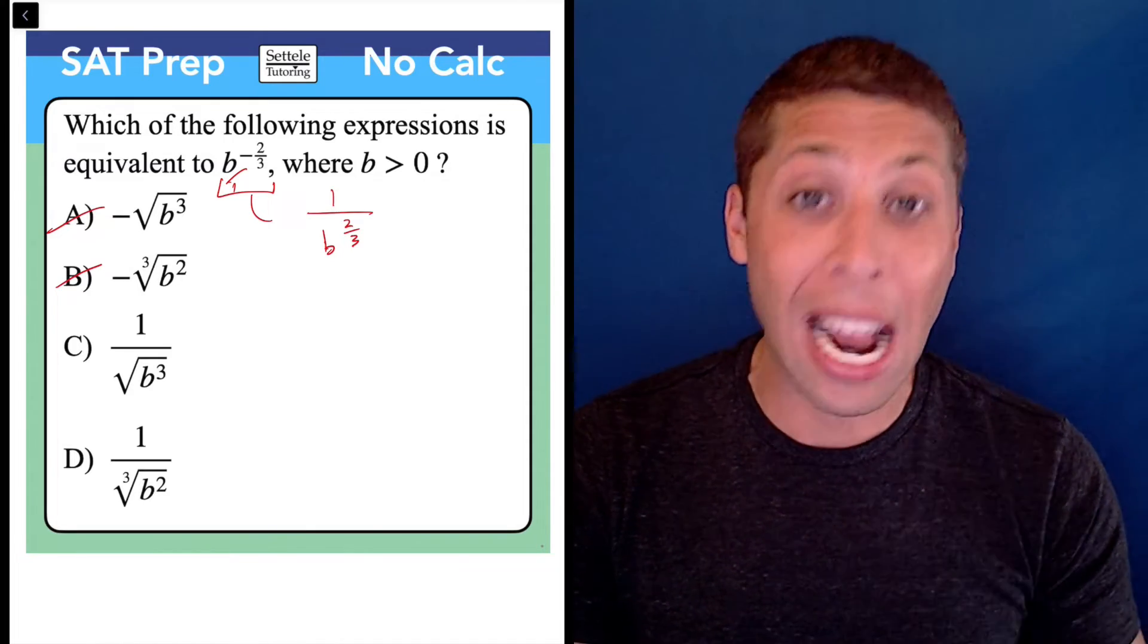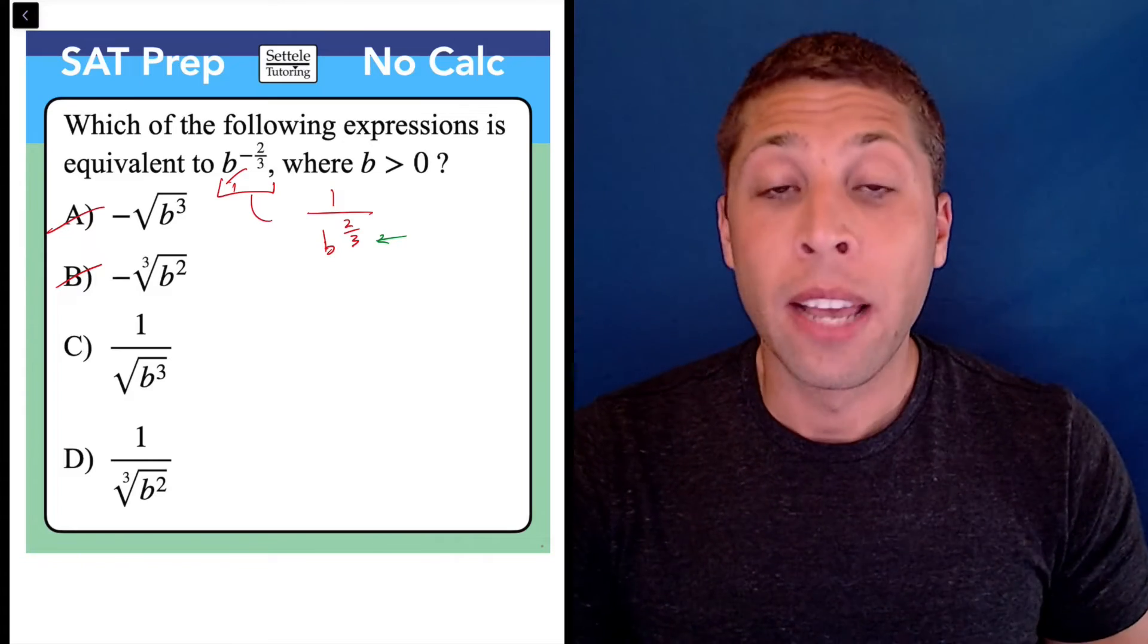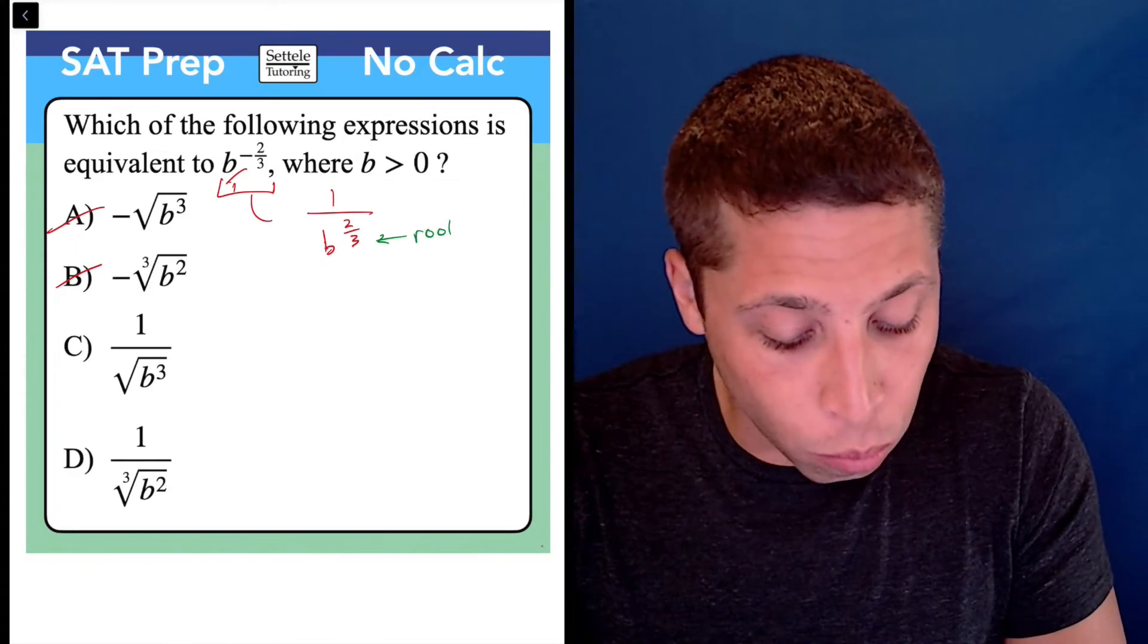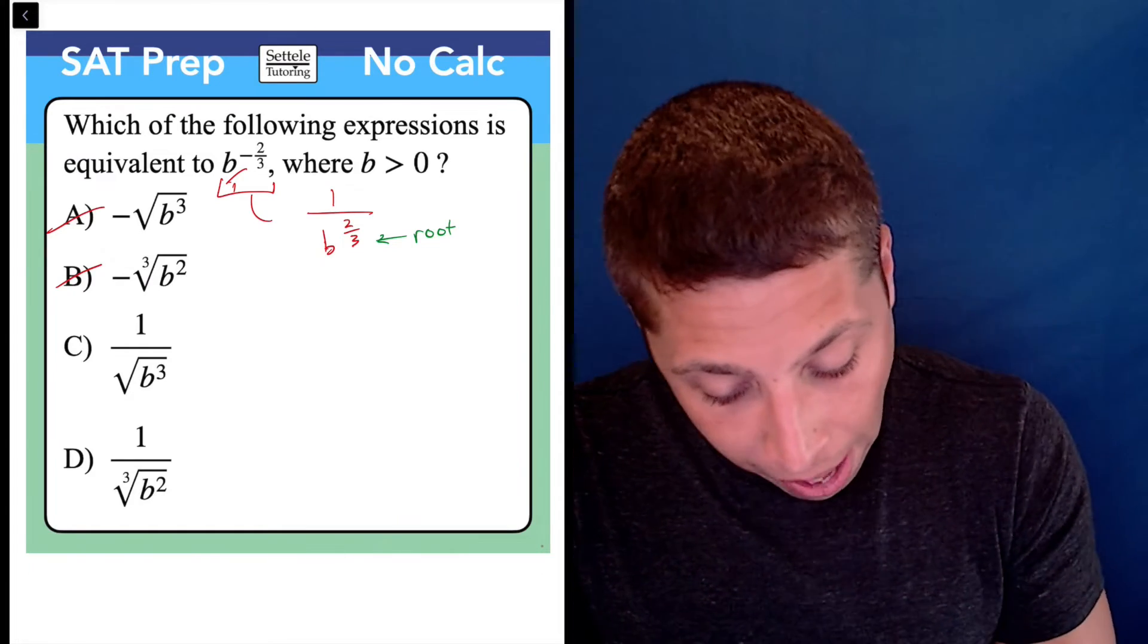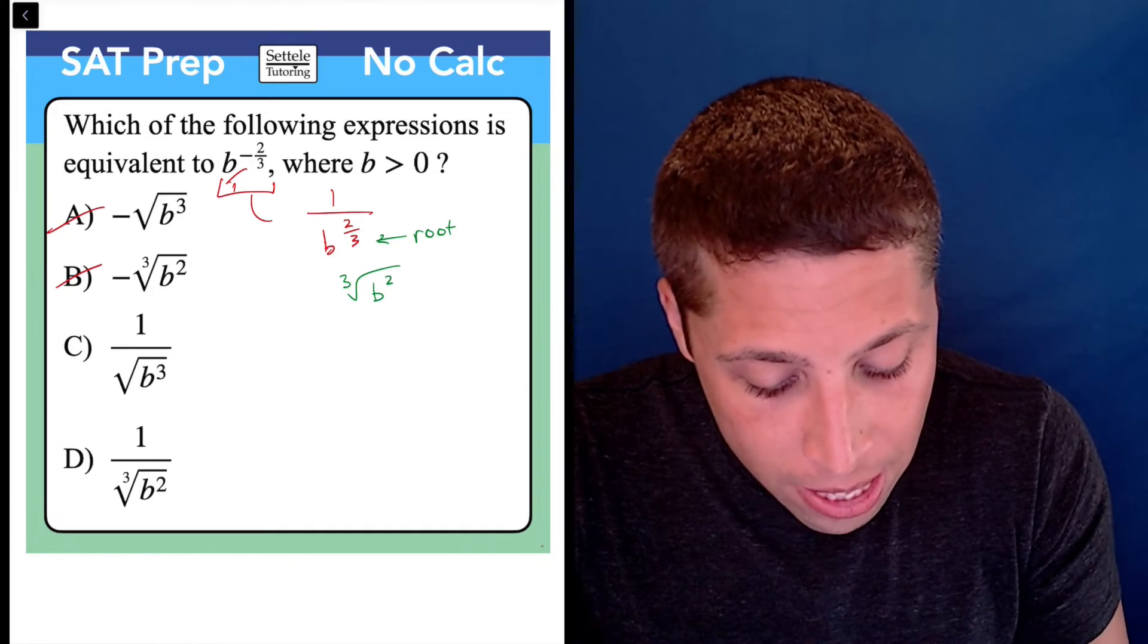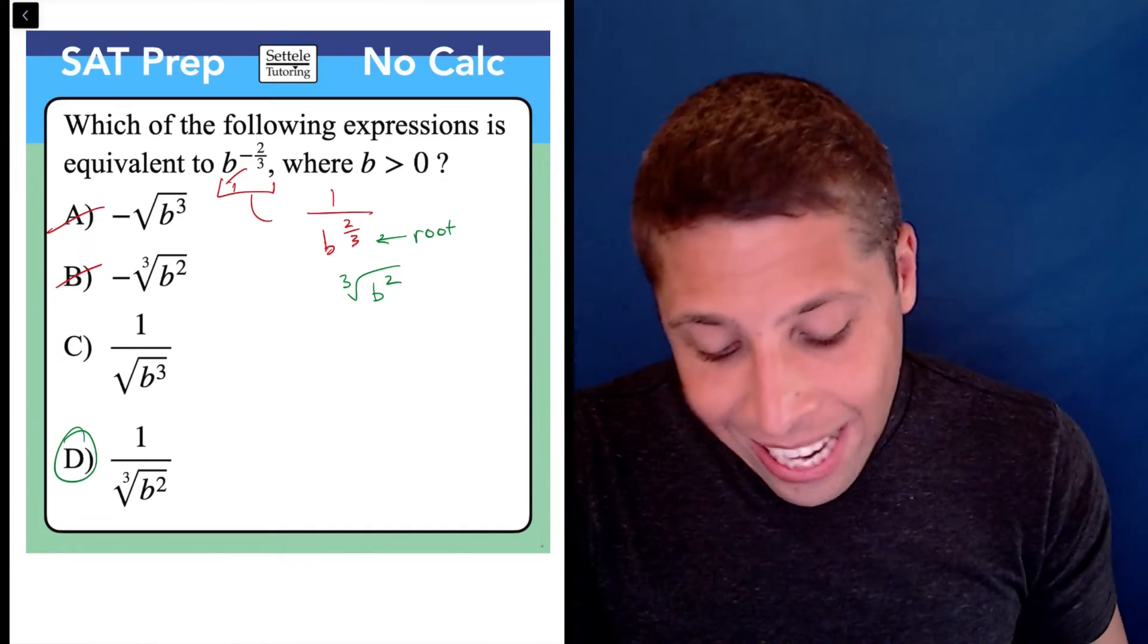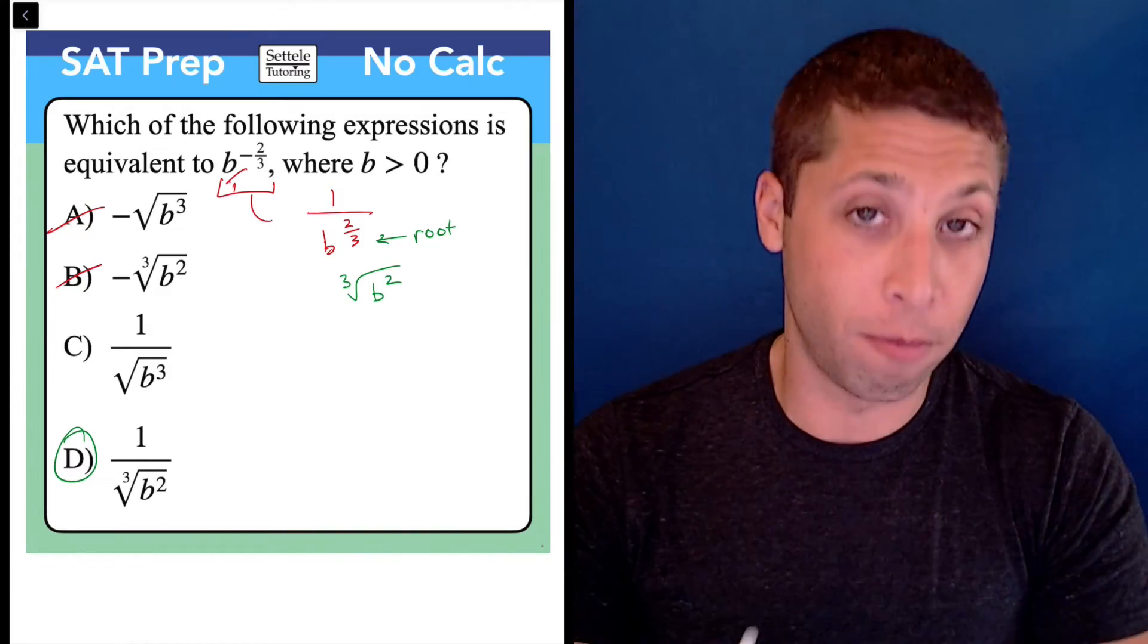Now I can just think about the rules for fractional exponents and basically this is a double exponent. The top part is a regular old exponent, a square, and the bottom part is the root. And so in this case, when we have two-thirds, we're going to have the cubed root of B squared. And now again, remember that is on the bottom of a fraction, meaning that D is going to be our answer because it is one over the cubed root of B squared.